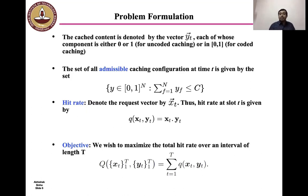For the case of hit rate, we denote the request vector at time t by the variable xt. xt is an n-dimensional vector, each of those components are either 0 or 1. And since a user requests only one file per slot, only one component of xt is 1, the rest are 0. Hence, the hit rate for the given incoming request vector xt and the caching configuration yt is simply given by the dot product. That is q(xt, yt) which is the reward obtained per slot is given to be xt·yt.